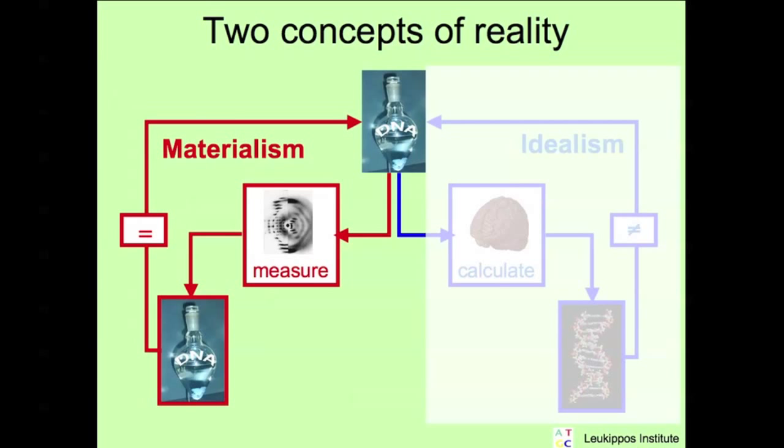This concept means, with an object, let us say DNA. We are able to measure this DNA with methods like x-ray crystallography and others. This leads to objective data, to facts. Objective in this context means, the data are true, independent of the scientist who collected them. Thus, our picture of the DNA is identical with the object DNA, which exists independent of us.